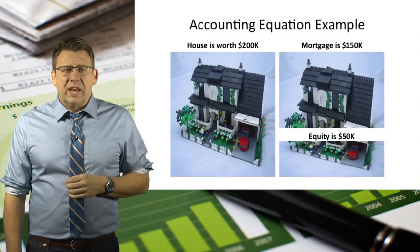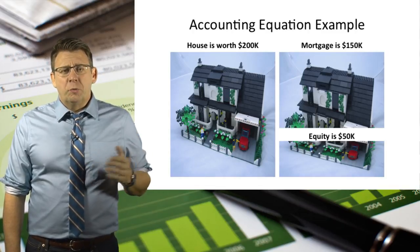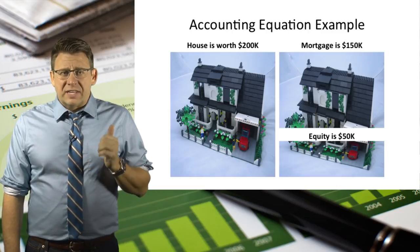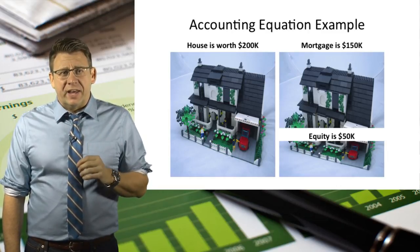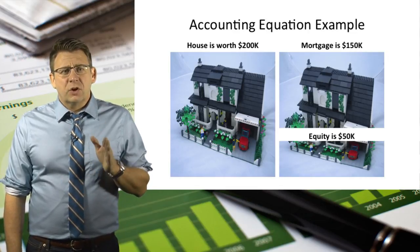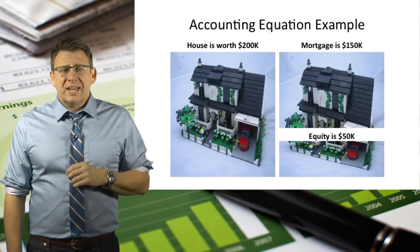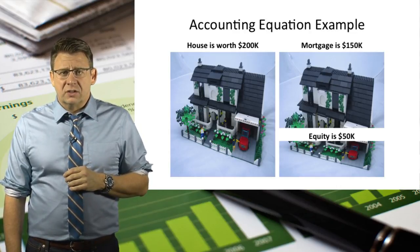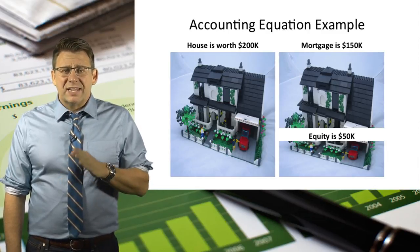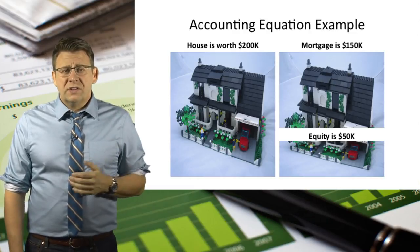Finally, let's look at a basic example of the accounting equation. Let's say a home is worth $200,000. This house is an asset because it has value and provides benefit into the future. However, there is also a home loan which we call a mortgage. Let's say the amount of that mortgage is $150,000. A mortgage is a liability because it's a claim against the asset from an outside party, which in this case is a bank.